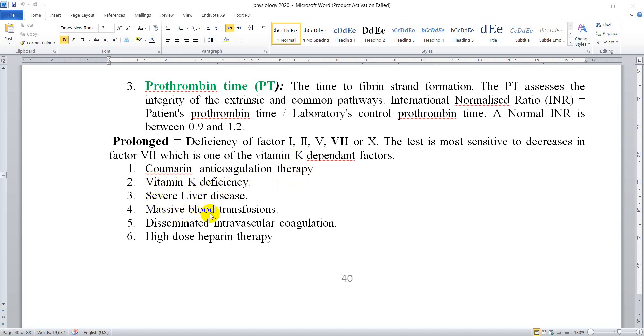PT is affected by coumarin anticoagulation therapy, vitamin K deficiency, severe liver disease, massive blood transfusions, disseminated intravascular coagulation, and high dose heparin therapy. All of these lead to prolongation of PT. Prolongation could result from any one of these causes.